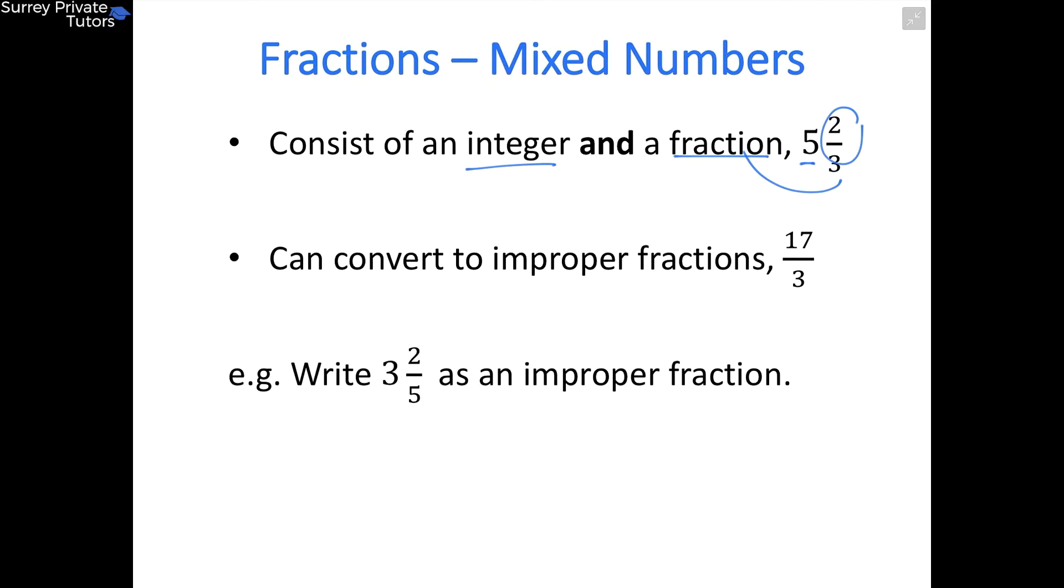You can convert a mixed number like 5 and 2/3 into an improper fraction, which is a fraction where the numerator is bigger than the denominator. For example, 17/3.